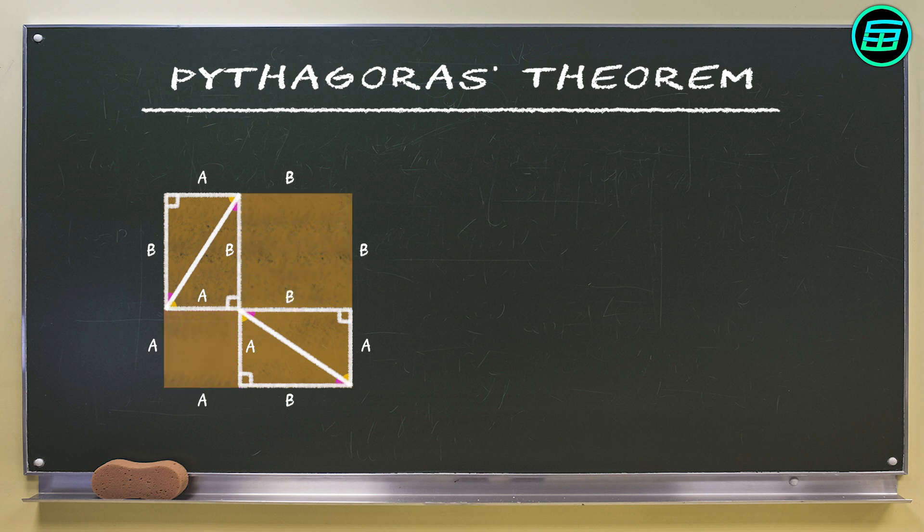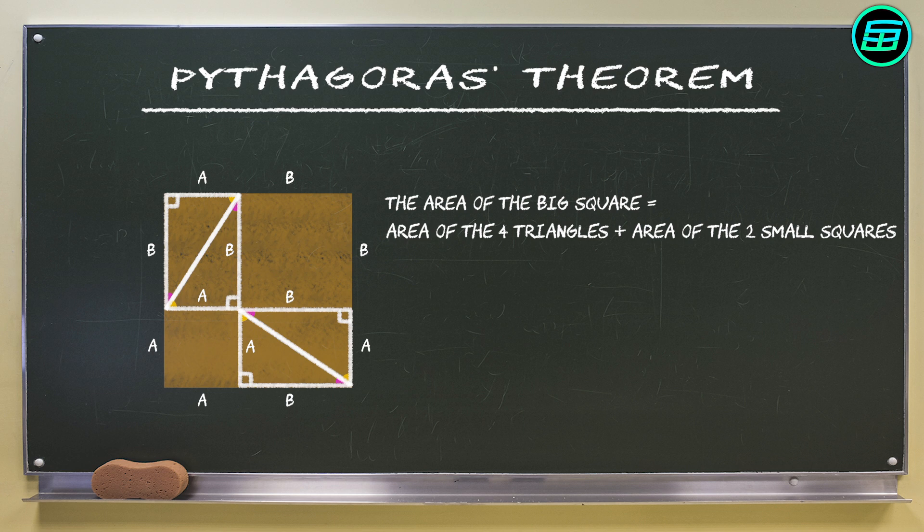Now, the area of the big square equals the area of the four triangles plus the sum of the areas of the small squares. So the area of the large square equals the area of the four triangles plus A squared plus B squared.